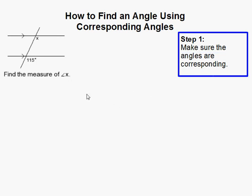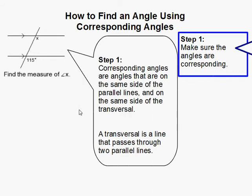Okay, how to find an angle using corresponding angles. Basically what we need to do is we need to find out and make sure that these are in fact corresponding angles. So the first thing I'm going to do is make sure that both sides are on the same side of the transversal.